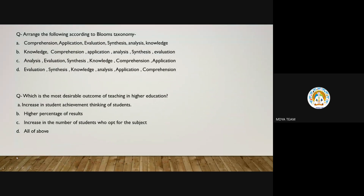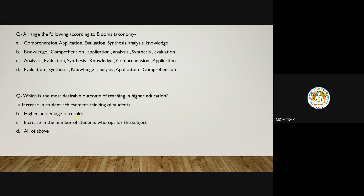Now a practice question. The correct answer is B — it was just a sequencing question. You made it easy with the KCA2SE trick. The options are easy, but they can make it difficult by putting 'analyze' before 'application' in the options.